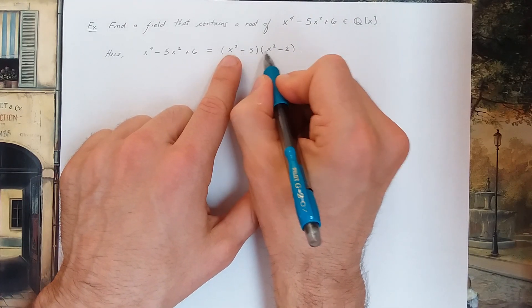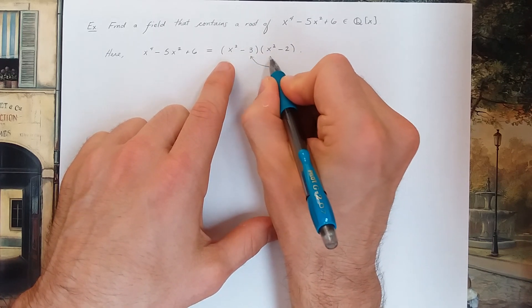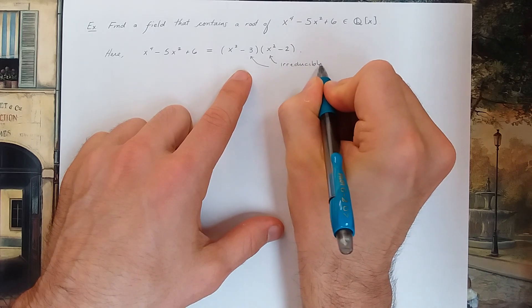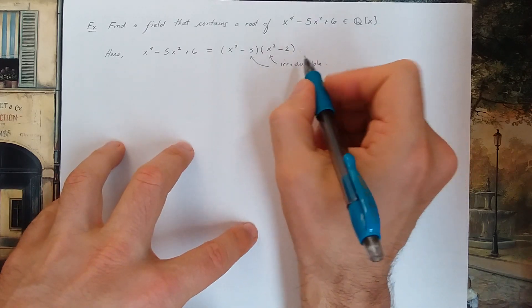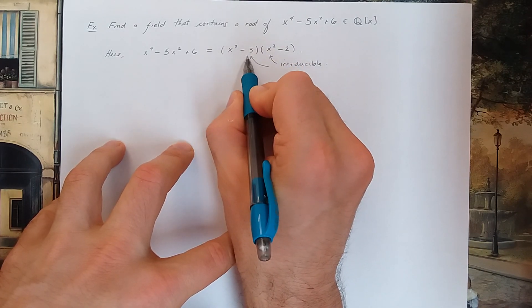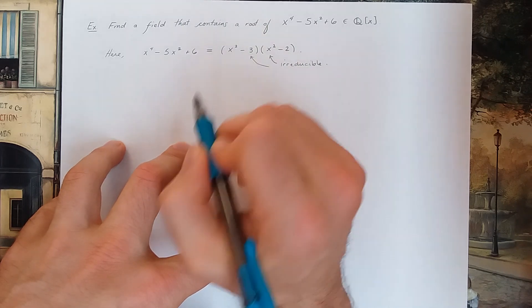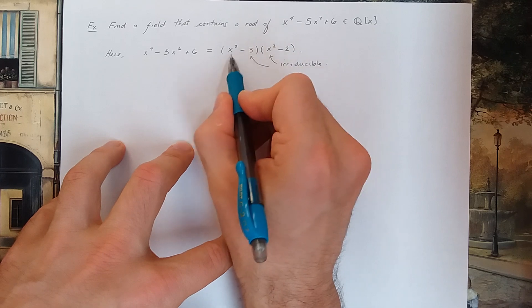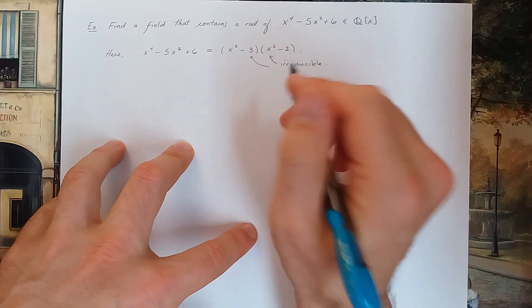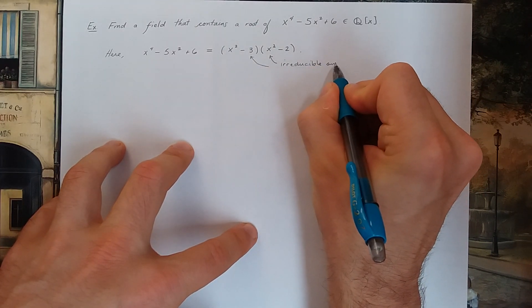You could verify that each one of these is indeed irreducible. There are a number of ways to do that. You could check for example using the rational root theorem that the first polynomial has no roots because such roots would either have to be plus or minus 1 or plus or minus 3. Alternatively you can use Eisenstein's criterion on the first polynomial with p equals 3 and get these are irreducible over Q.